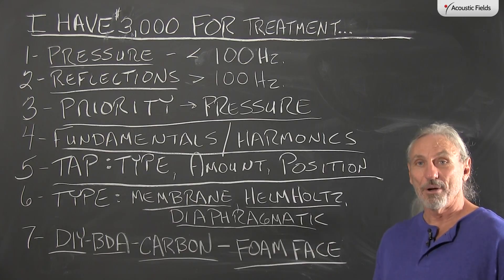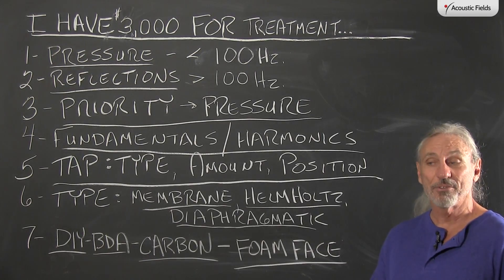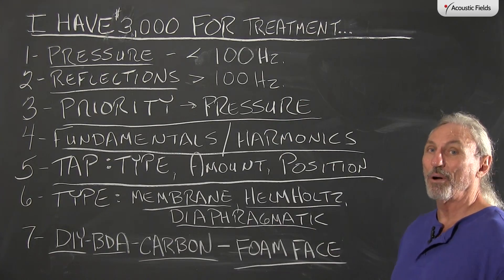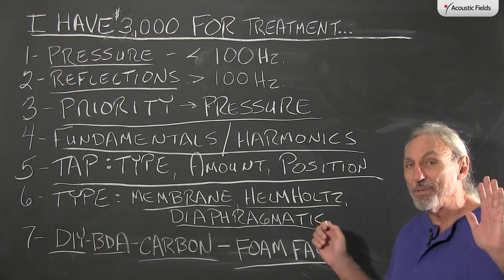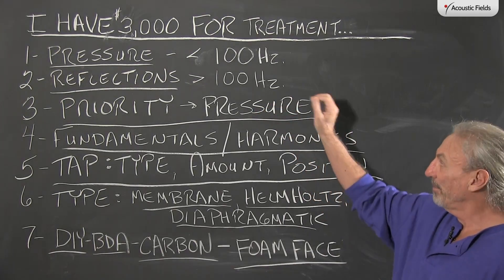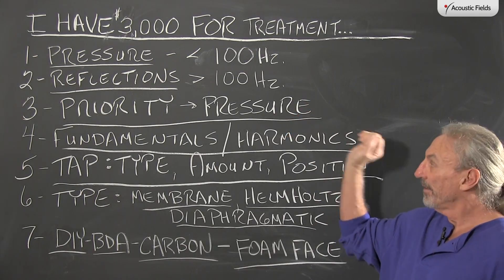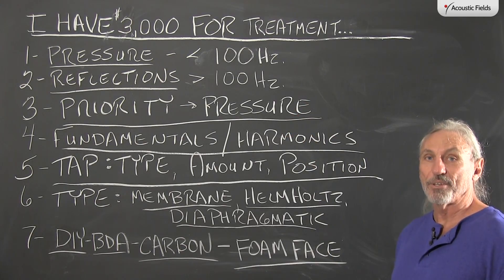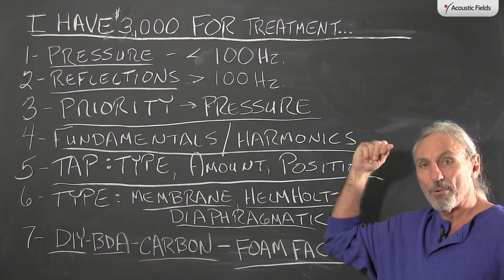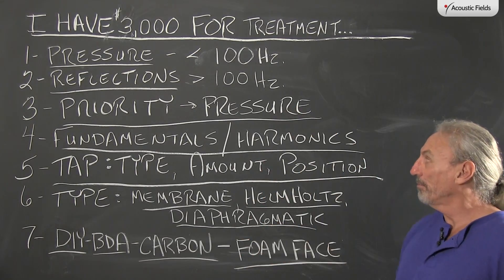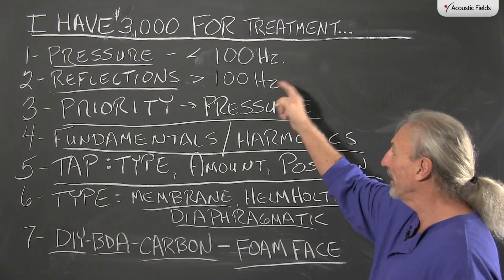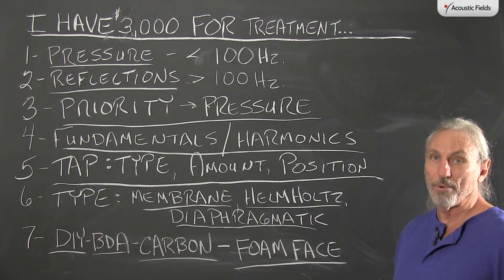They have a carpentry skill set and can build things. So two areas we know from all past videos — and I'm never going to change this paradigm — are pressure and reflections. Everything less than 100 cycles is pressure; everything greater than 100 cycles is reflections, because that's the breakpoint we use for treatment. Treatment below 100 requires special types; reflections above 100 require special rates and levels depending on usage. It's two different kinds of treatment, which is why we use that as a breakpoint in small rooms.